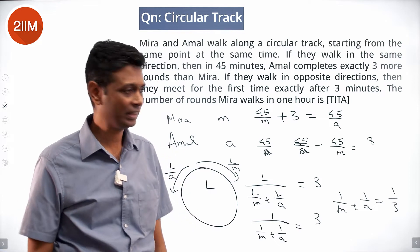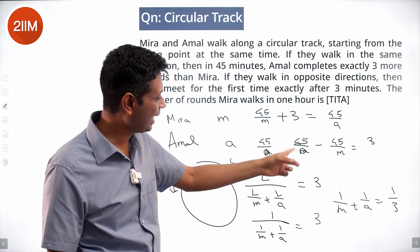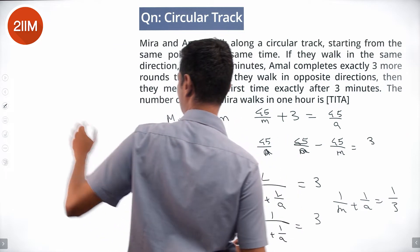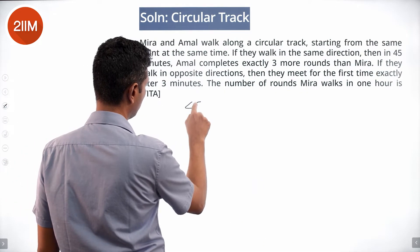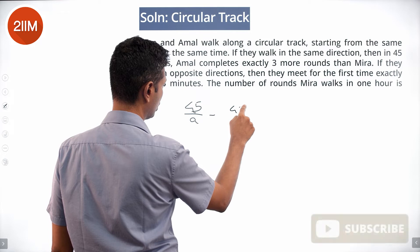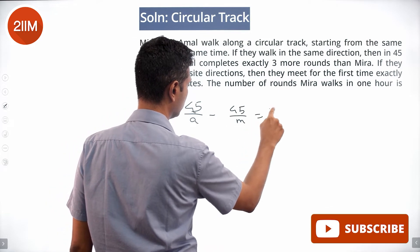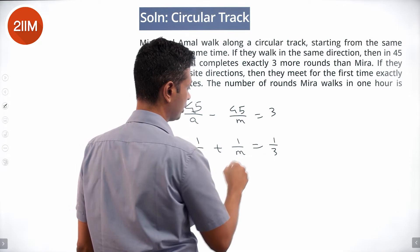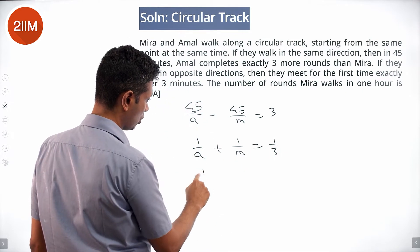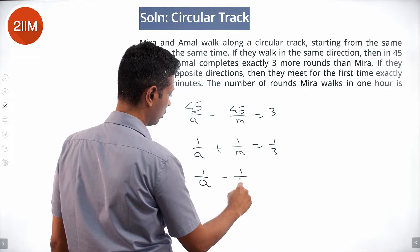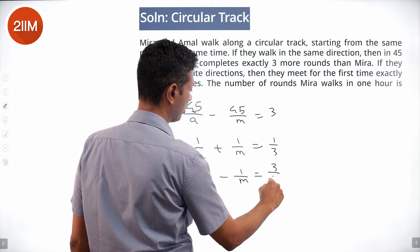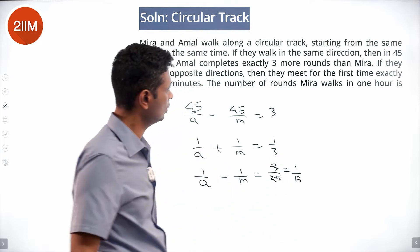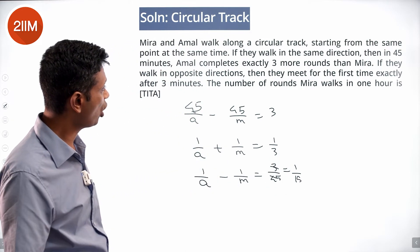We now have two equations: 45/a minus 45/m equals 3, and 1/a plus 1/m equals 1/3. Rewriting the first equation: 1/a minus 1/m equals 3/45, which is 1/15. The number of rounds Meera walks in one hour is what we want to find.